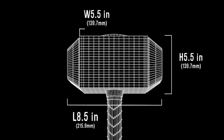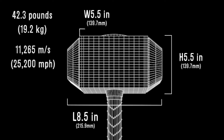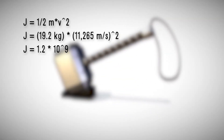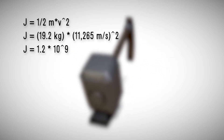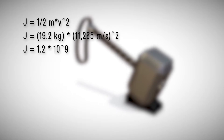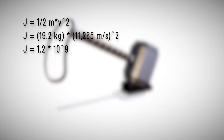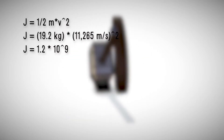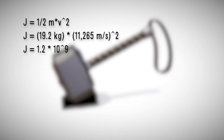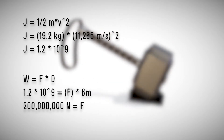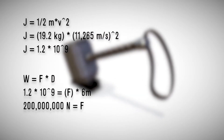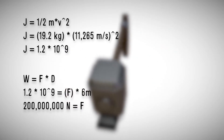Based on comic book statistics, Thor's hammer weighs approximately 42.3 pounds and he can throw the hammer at approximately 11,265 meters per second. For comparison, bullets travel around 400 to 1,200 meters per second. If we use the equation ½ mass times velocity squared, we can figure out the total amount of joules Thor achieves when he throws his hammer. We can plug in the values of 19.2 kilograms and 11,265 meters per second to solve for joules, and then estimate the distance of 6 meters between Thor and Hela. Plugging that into the formula work equals force times distance, we can solve to figure out the total amount of force exerted. Solving it, you get a total of 200 million newtons exerted overall.